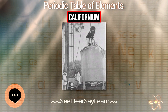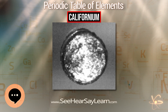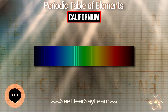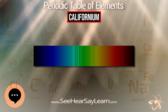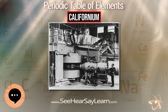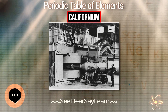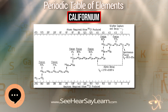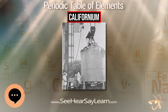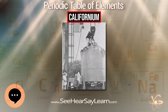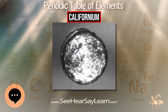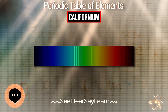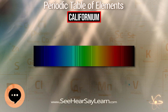Making it the heaviest element ever synthesized, the target for this experiment contained about 10 mg of californium-249 deposited on a titanium foil of 32 cm² area. Californium has also been used to produce other transuranium elements; for example, element 103 was first synthesized in 1961 by bombarding californium with boron nuclei. Californium that bioaccumulates in skeletal tissue releases radiation that disrupts the body's ability to form red blood cells.